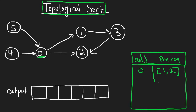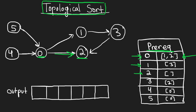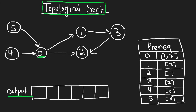So we have our prereq map which tells us for each node what its prerequisites are. Node zero has two prerequisites: one and two, because it has two outgoing edges. One has a single prerequisite: three. Two has no prerequisites — it has incoming edges but no outgoing edges. Three has a single prerequisite of two. Four has a single prerequisite of zero. And five also has a single prerequisite of zero. We're going to run DFS and build the output — the order in which we can take courses.